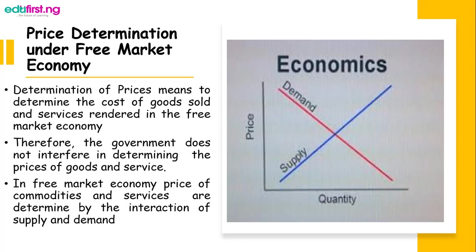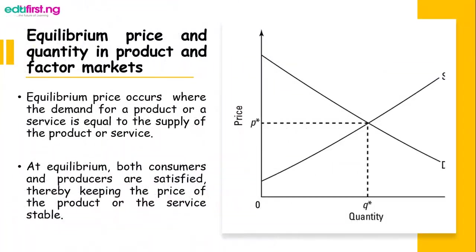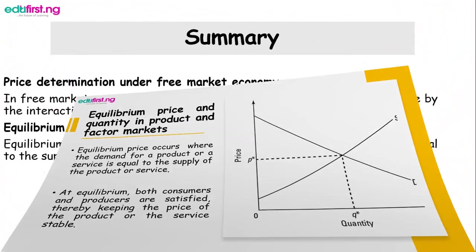Equilibrium price and quantity in product and factor markets — what is equilibrium? Equilibrium simply means equality between demand and supply. What is a factor market? A factor market is a market where the factors of production — that is, land, labor, and capital — are being bought and sold. A product market is a market where products like goods and services are being bought and sold.